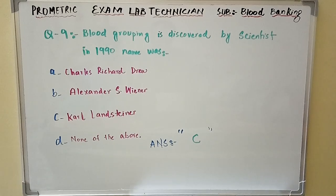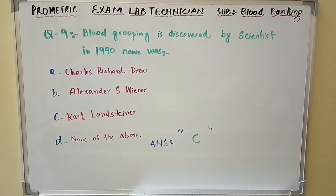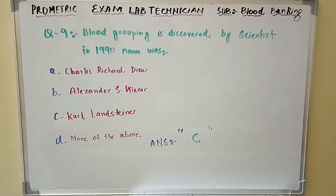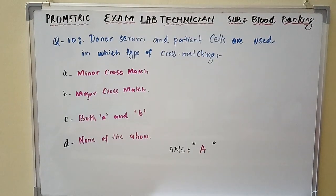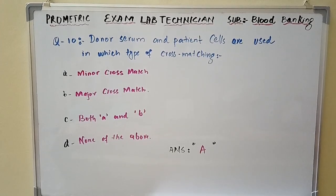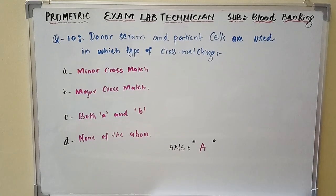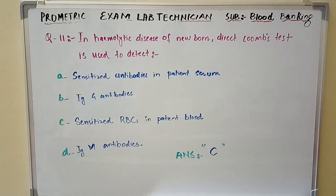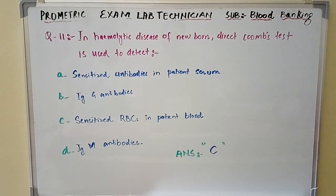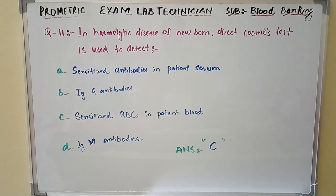Question number nine: Blood grouping discovered by scientist in 1900, name was — the answer is Option C: Karl Landsteiner. Question number ten: Donor serum and patient cells are used in which type of cross matching — the answer is Option A: minor cross match. Question number eleven: In hemolytic disease of newborn, direct Coombs test is used to detect — the answer is Option C: sensitized RBCs in patient blood.